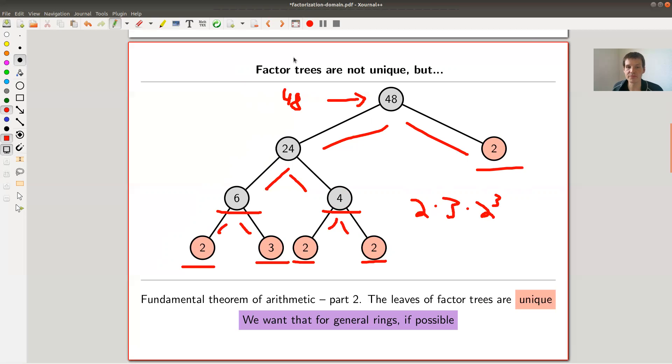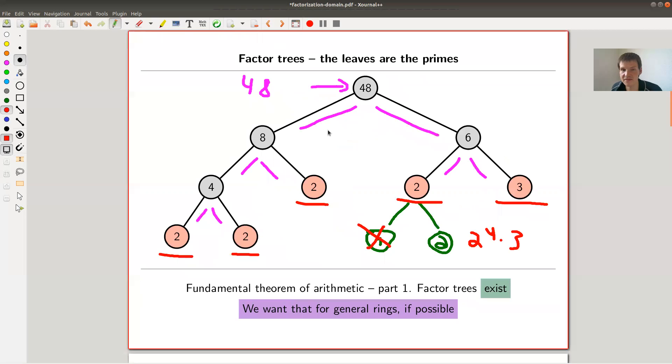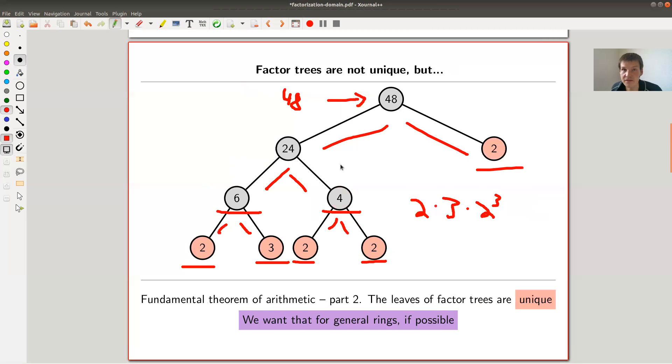So the fundamental theorem of arithmetic has two statements. It's an existence statement, and it's a uniqueness statement. And we really want to have both for general rings. Prime numbers are very important. We all learned that very early. So it makes sense to ask for factorization trees for prime numbers in general rings, or as general as possible.